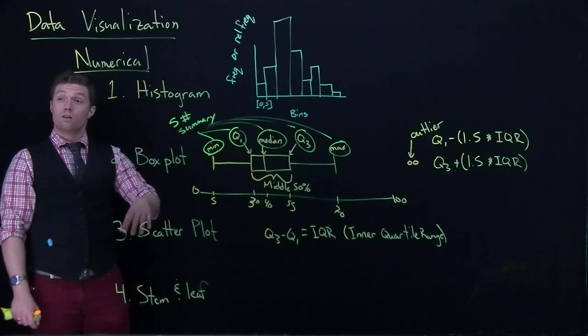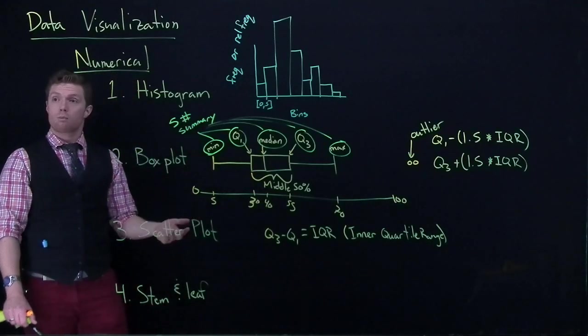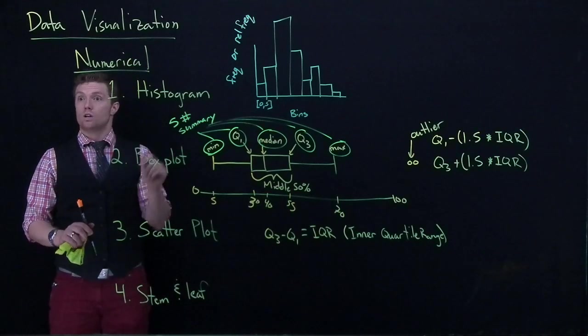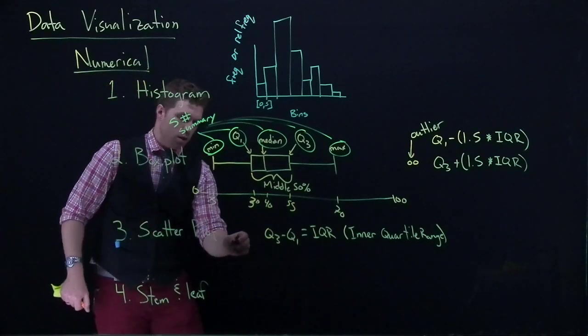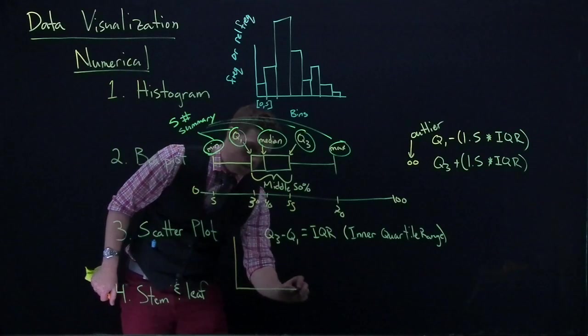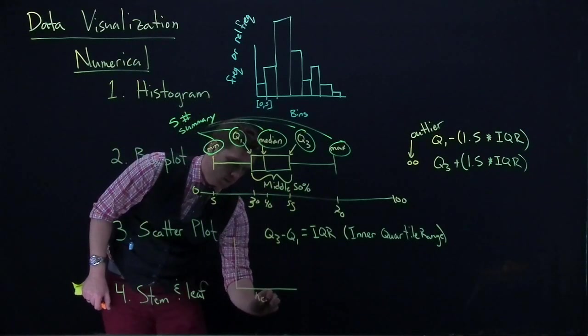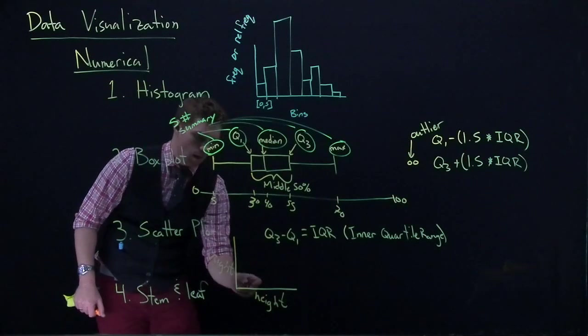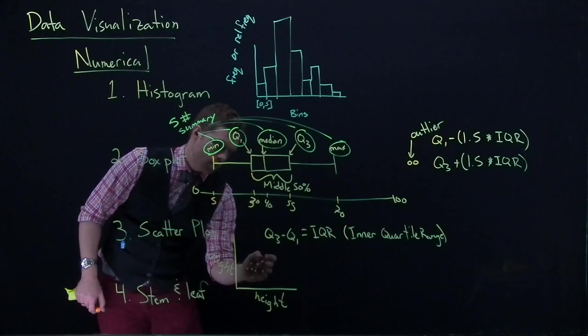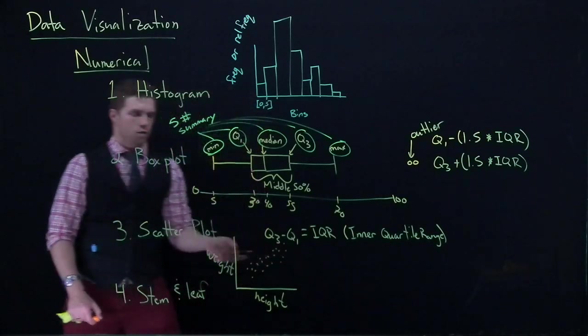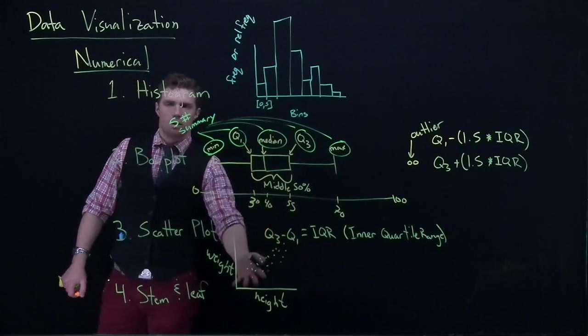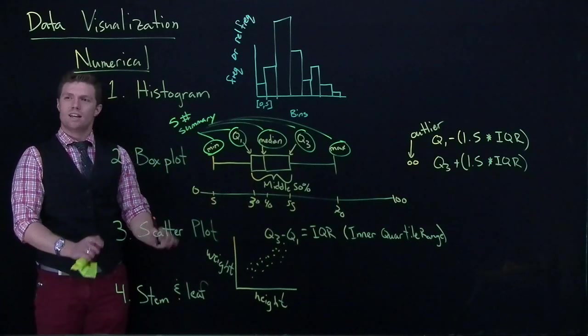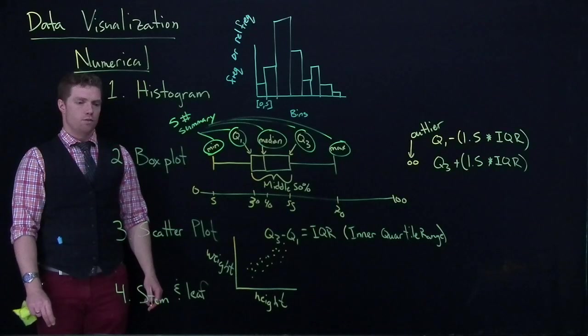The third one, we will get way more into depth later on in class, but just a scatter plot. So, if we have measured both like height and weight of people, we could plot those on a two-dimensional plot. And we could do something like this, where this would be height. This would be weight. And we could do something like this, and we could plot those data points. So, generally, as you get taller, you generally weigh more. Anyhow, so that's generally a scatter plot. I'm just going to leave it at that for right now, and we can dive into more of it later.